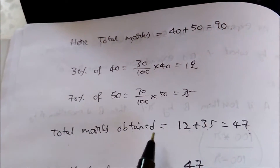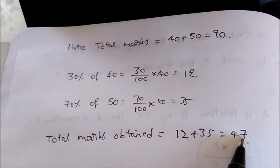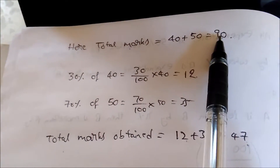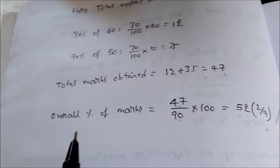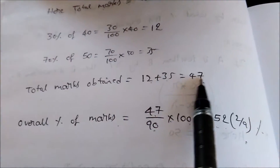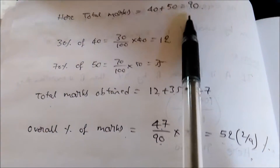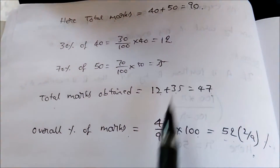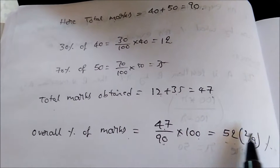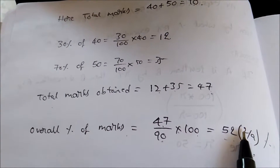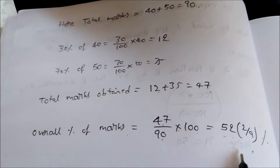Total marks obtained is 12 plus 35, which equals 47. They have written exams for 90 marks combined. So the overall percentage of marks is 47 divided by 90, multiplied by 100, which gives 52 and 2/9 percent. This is the overall percentage of marks they have obtained.